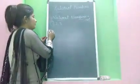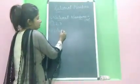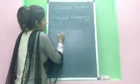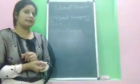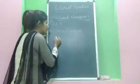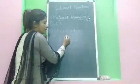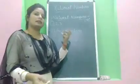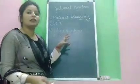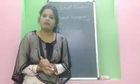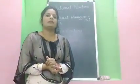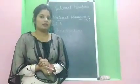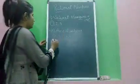The second category is whole numbers. Whole numbers are 0 plus all natural numbers. Zero is the smallest whole number and there is no largest whole number.